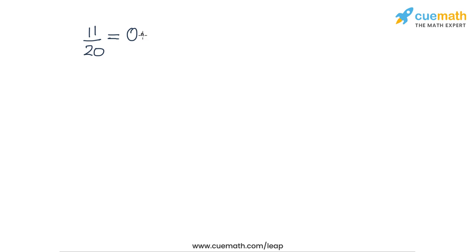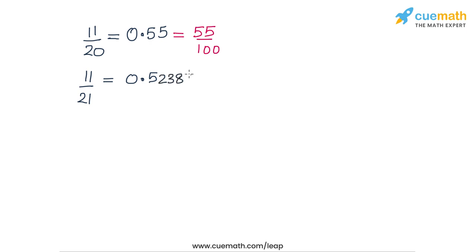Let's take another example. 11 by 20 has the terminating representation 0.55, because 11 by 20 can be written as 55 by 100. On the other hand, 11 by 21 actually has the non-terminating representation 0.523809 bar — this block of six digits repeats. This happens because the denominator 21 cannot be converted to a power of 10.